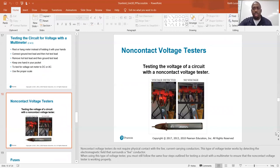Non-contact voltage testers. Some meters actually have that function, but some people have those little pocket ones like you see here in the picture. All you do is hold it up to a receptacle. You don't have to plug it into anything, you just hold it up to a receptacle and it'll beep and flash lights letting you know if there's electricity present or not. Non-contact voltage testers do not require physical contact with live current-carrying conductors. This type of voltage tester works by detecting the electromagnetic field that surrounds a live conductor.